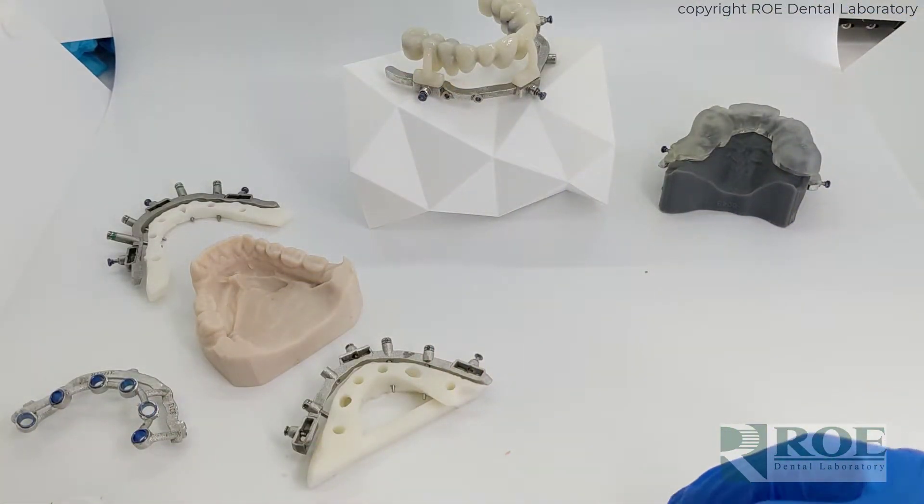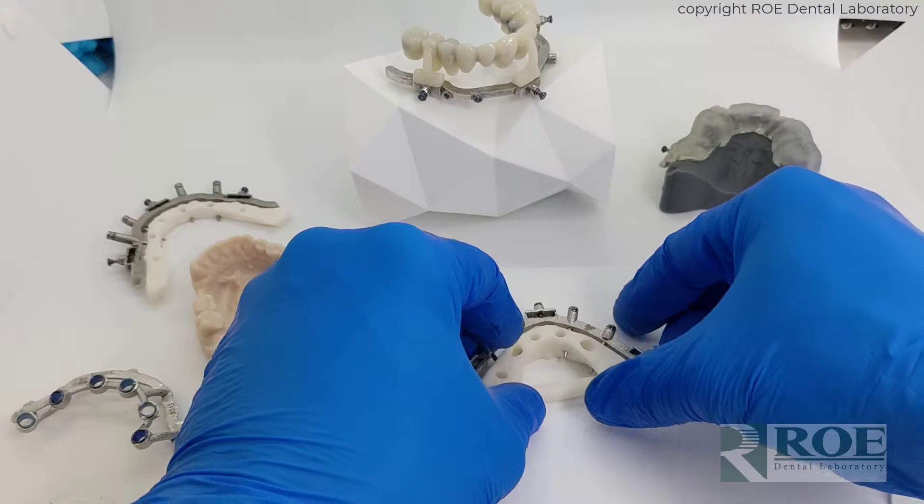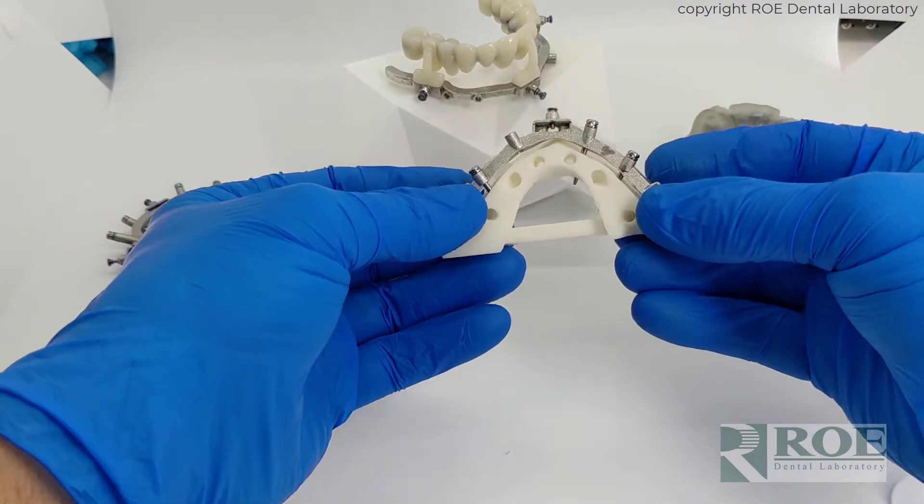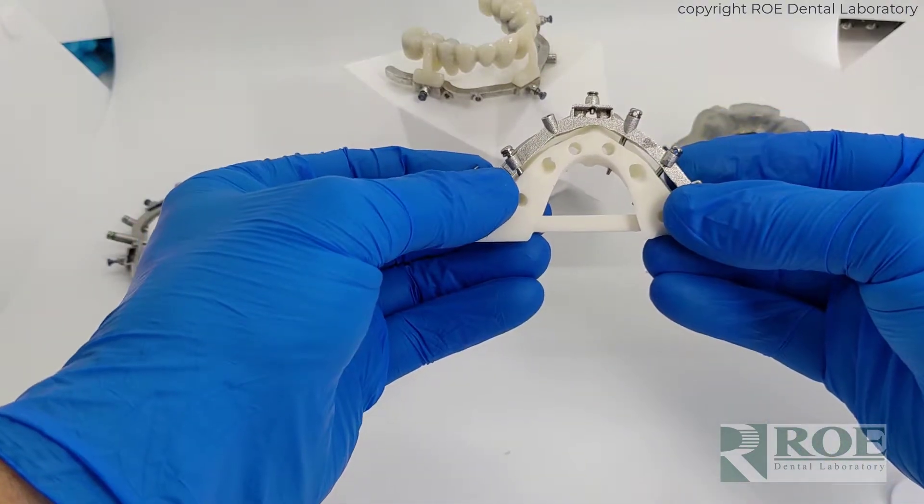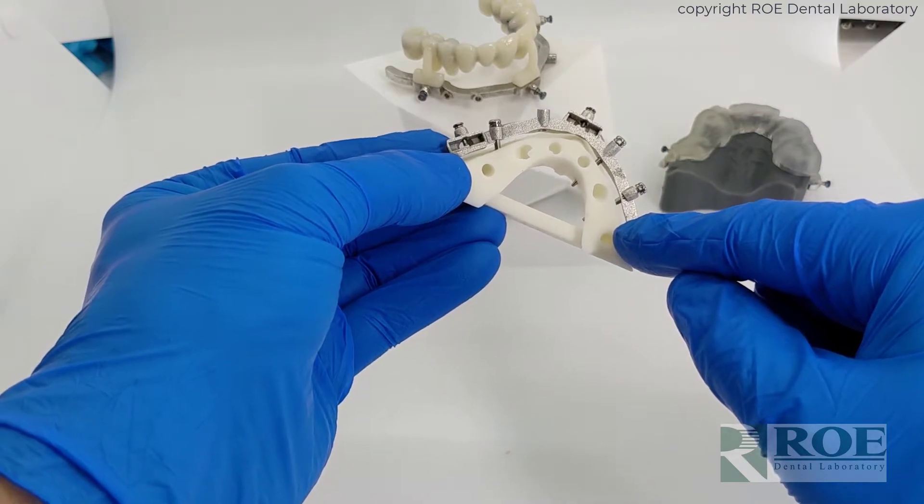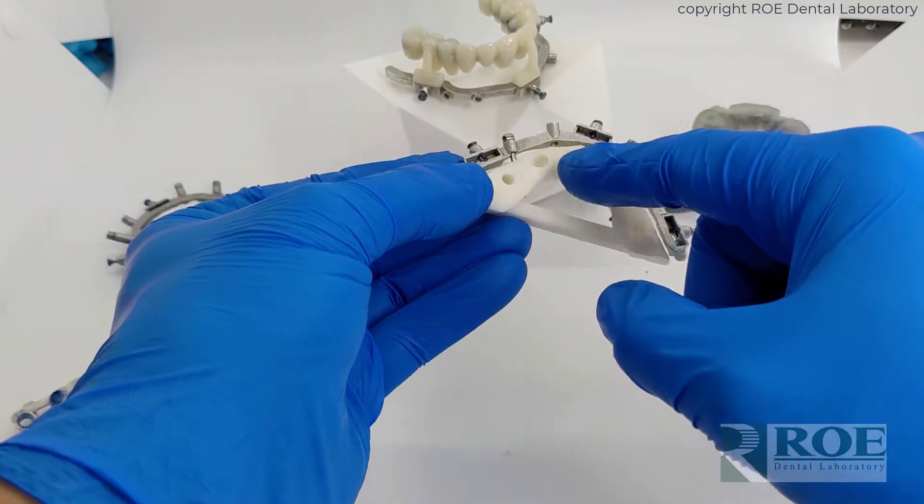Let's move plastic off to the side and show the advantages of why metal guides are far superior. Number one, it's a floating guide system. So it only has a labial aspect, labial buccal aspect, no lingual.